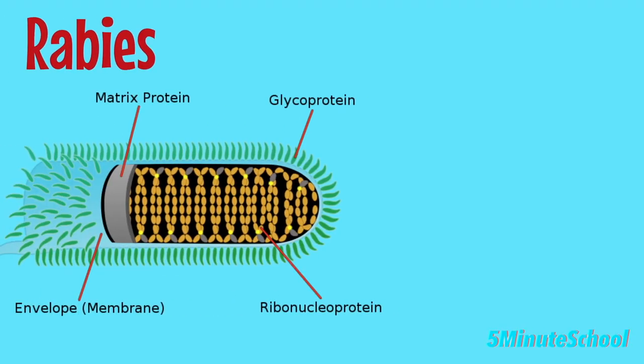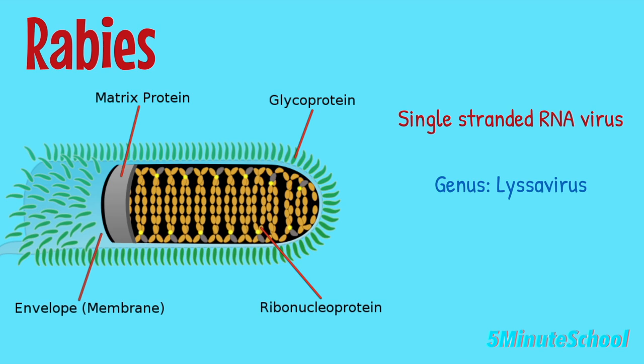Rabies is caused by a single-stranded RNA virus of the genus Lyssavirus from the family Rhabdoviridae. There are several strains of the virus, which are classified based on their genetic makeup and the animals they infect.